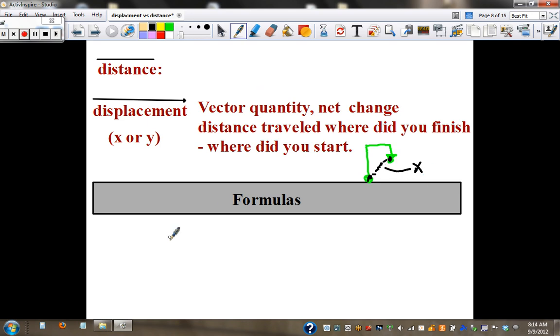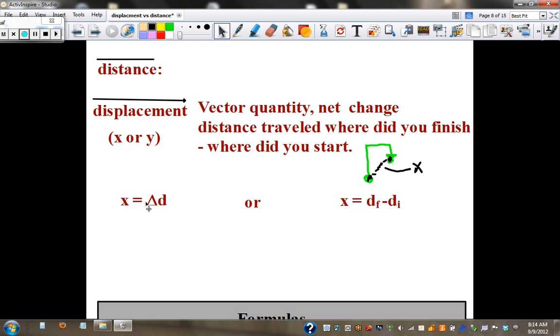and that black line represents displacement. We usually draw displacement with an x. The formula for displacement is: displacement equals change in distance. The triangle means change. This is final position minus the initial position—the difference between finishing point and starting point.